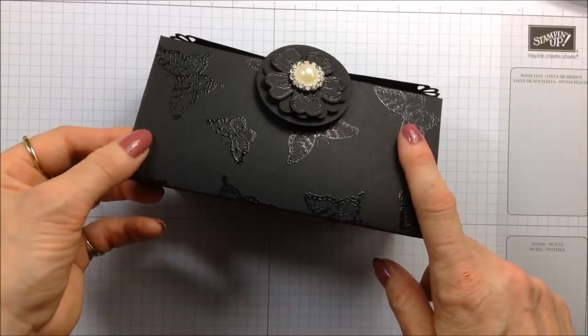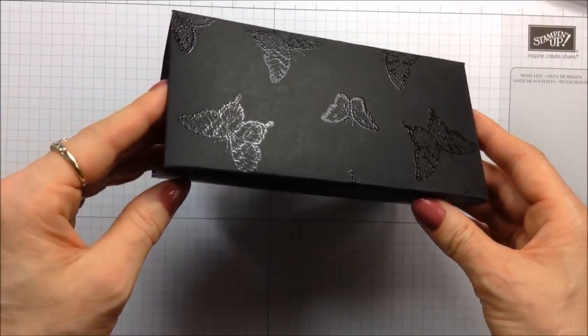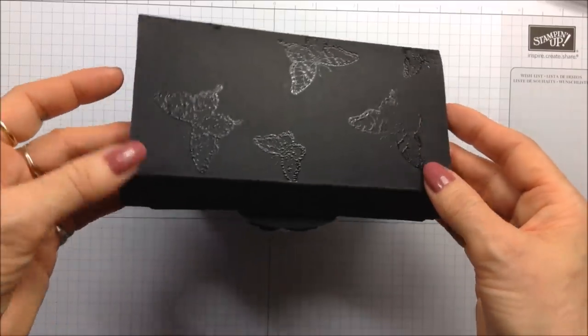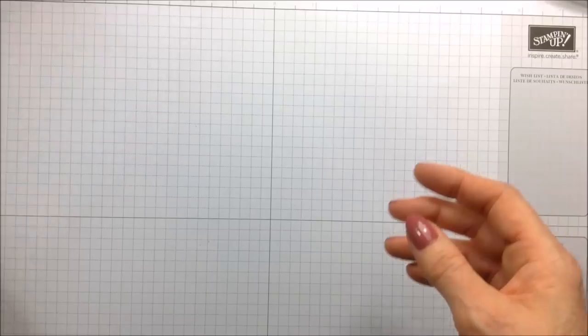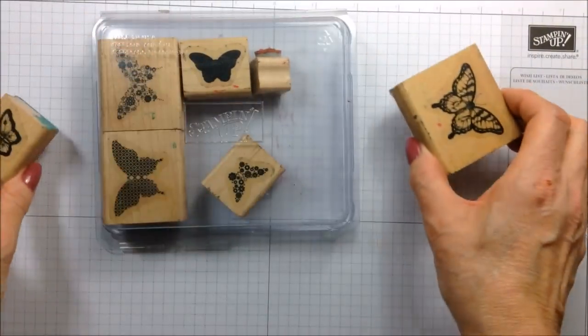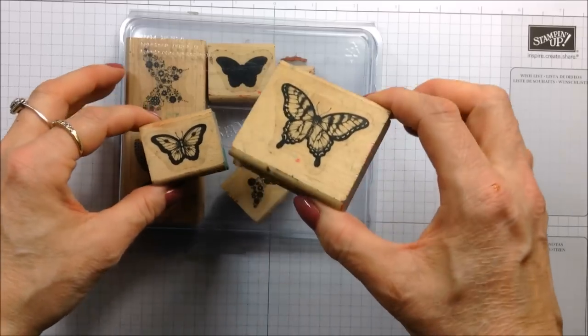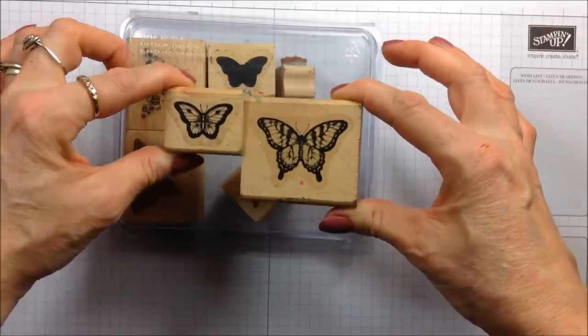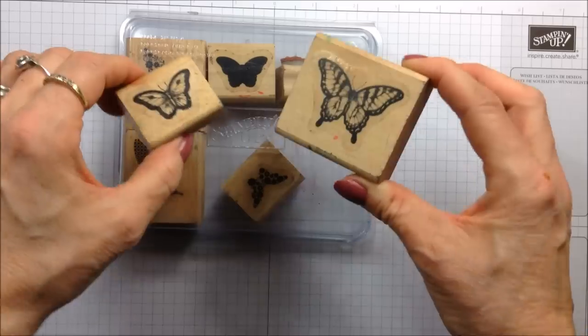You can see here I have heat embossed in clear embossing powder this beautiful design all over my bag, my box. For that I use this stamp set here, a wood-mounted set called Papillon Potpourri. These are the two stamps that I picked out to use to stamp on my cardstock.